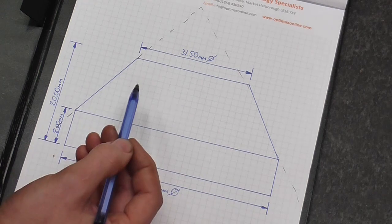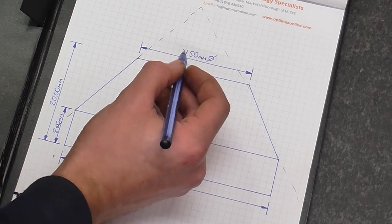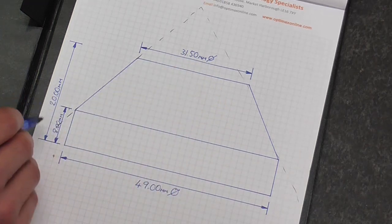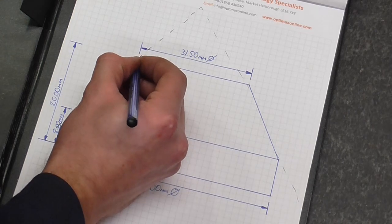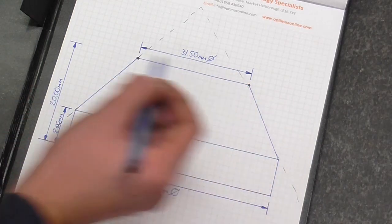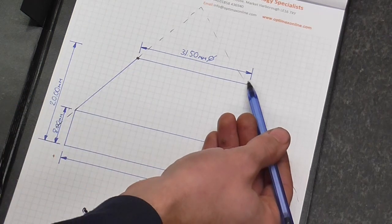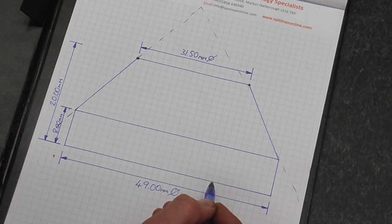I'm actually going to use the dimensions given here to construct gauge points that I can then work to. So we know that when you are 20 mil up from the datum face and you are 31.5 millimeters between two points, your cone position should be correct to this face. That's pretty much all we need from the drawing.